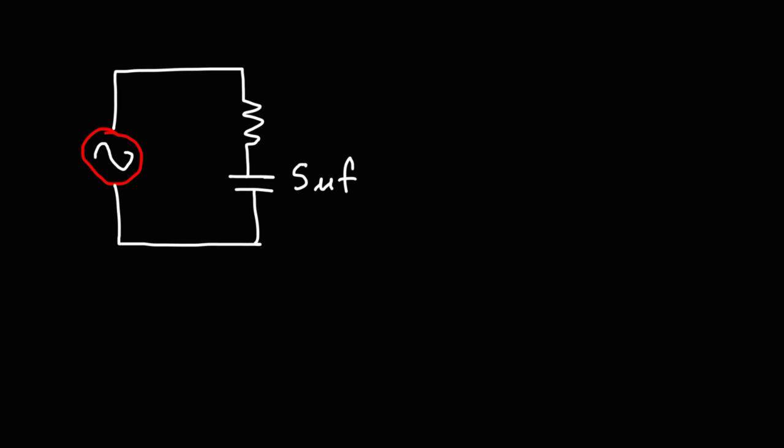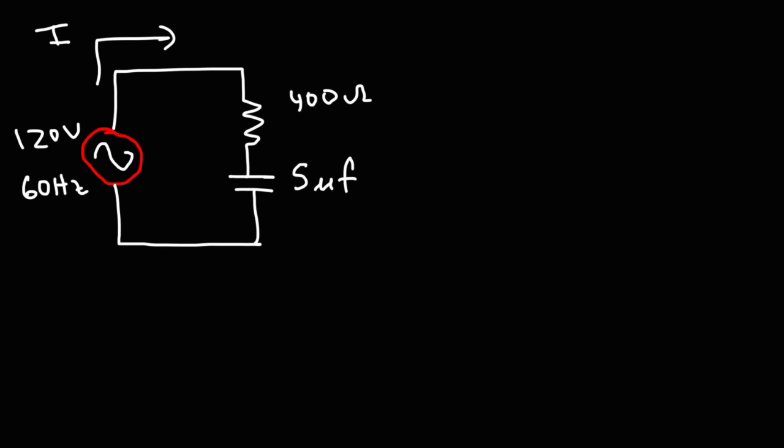Now let's work on some example problems. We have an AC signal as the power source of this circuit, connected to a resistor and a capacitor. The capacitance is 5 microfarads, the resistance is 400 ohms, and we have a 60 hertz, 120 volt AC signal. Calculate the current flowing in this circuit.